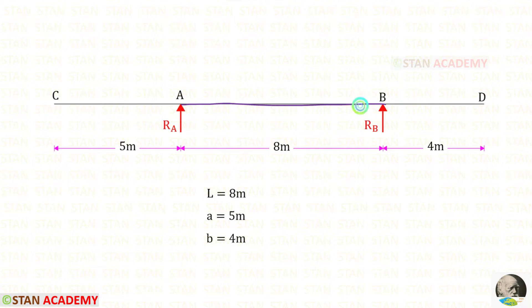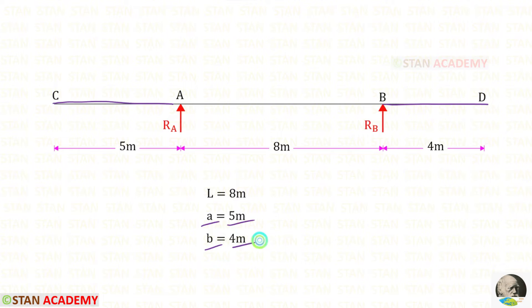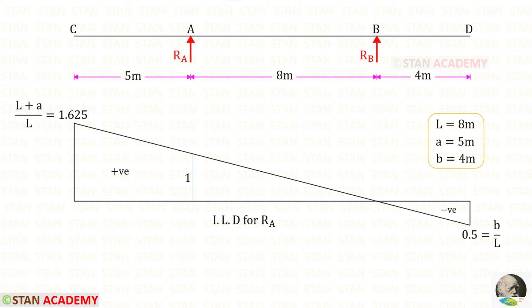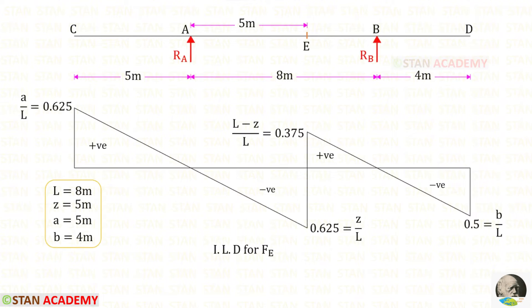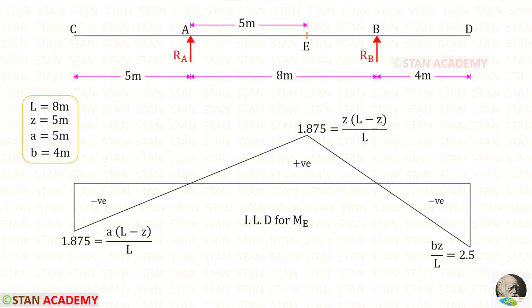Let us keep the length of the beam as L, the length of the left side overhanging as A, and the length of the right side overhanging as B. This is the ILD for RA. This is the ILD for RB. This is the ILD for the shear force at point E. This is the ILD for the bending moment at point E.